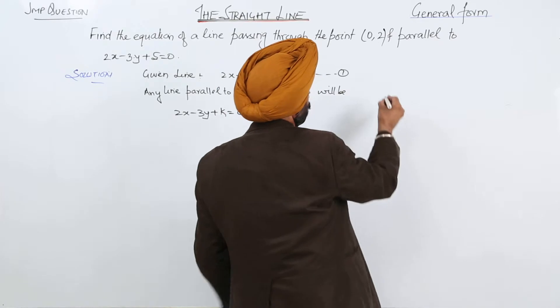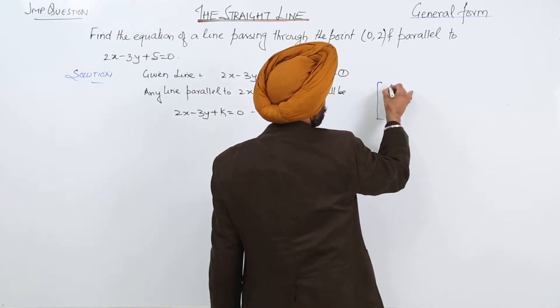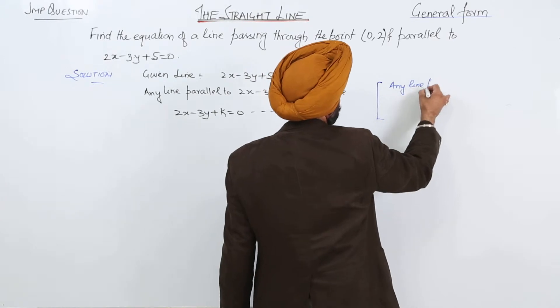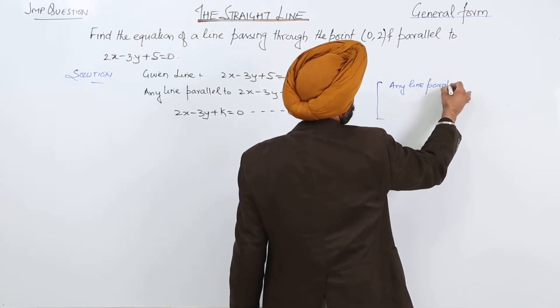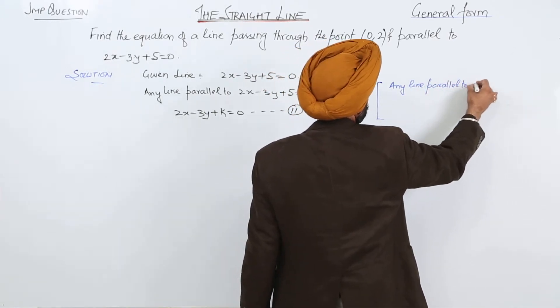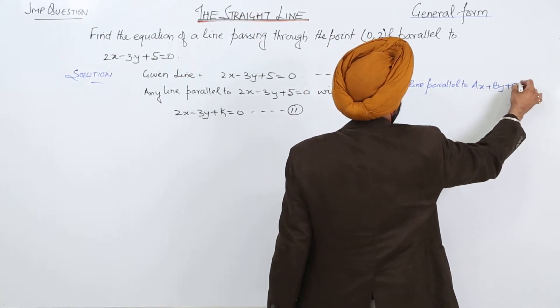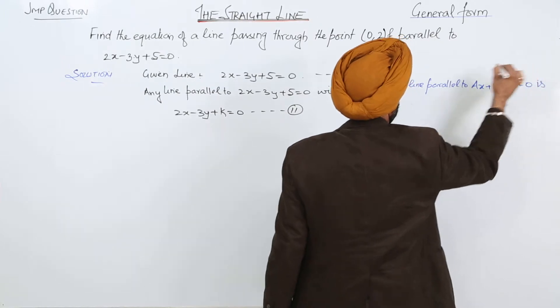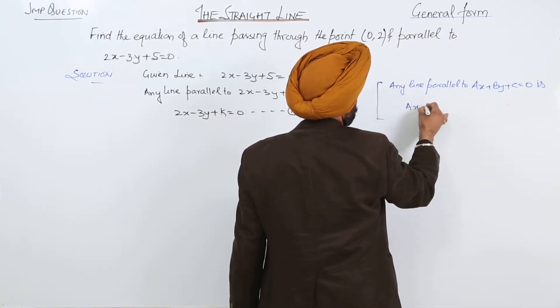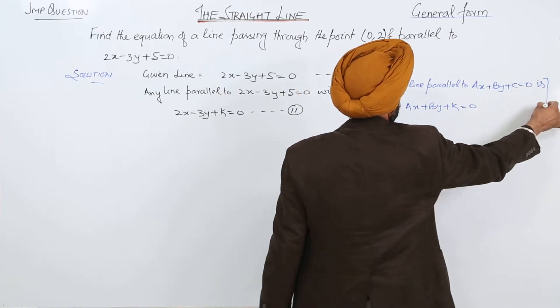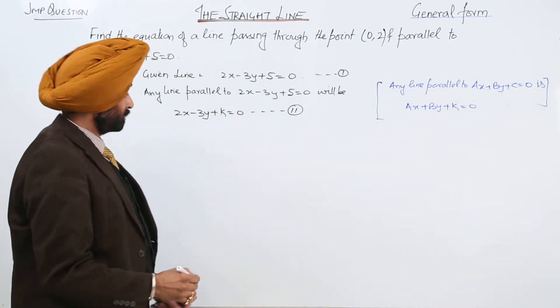Why I have written directly? Because we have already done it, that any line parallel to ax + by + c = 0 is ax + by + k = 0. That's why I have directly written this.